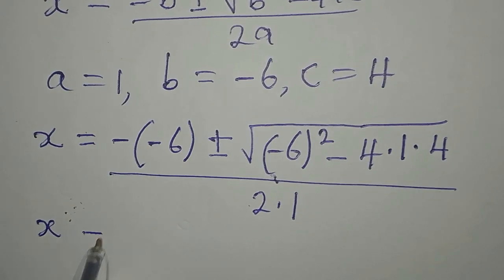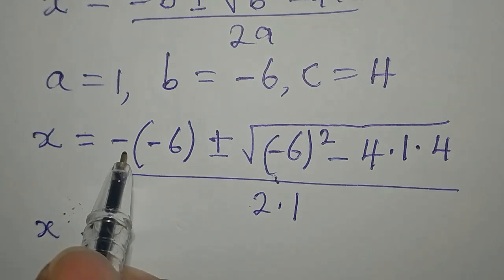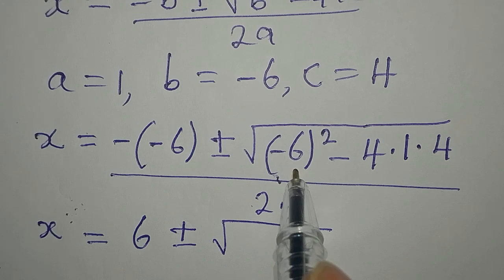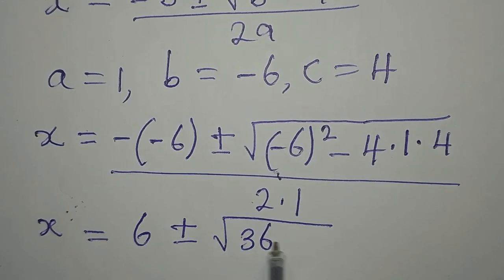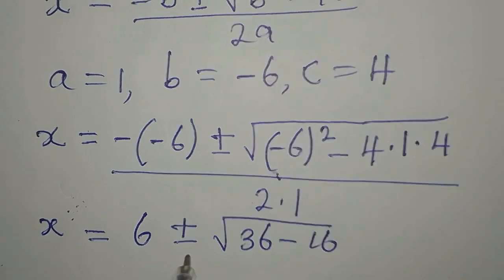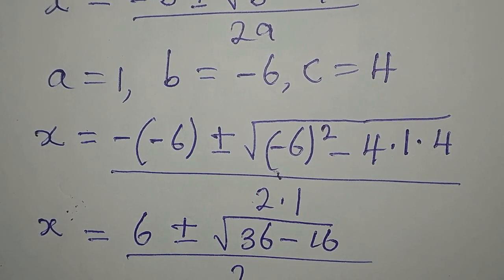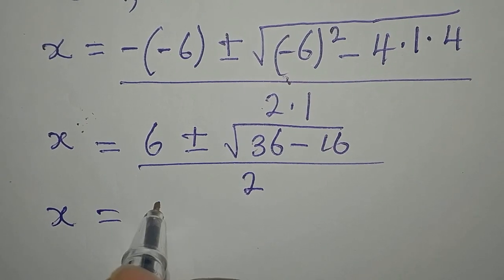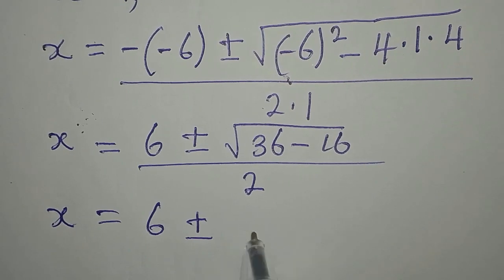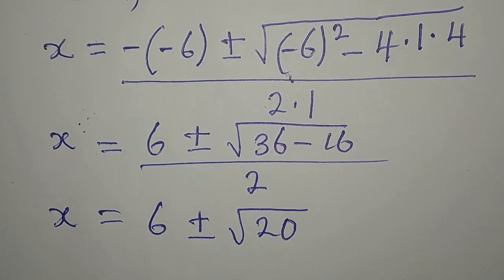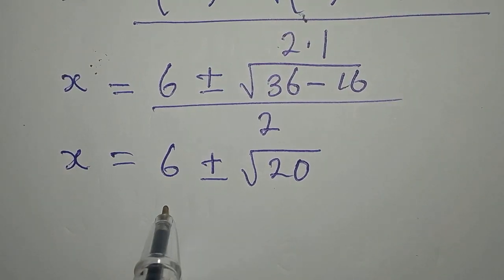So x equals positive 6, plus or minus the square root of: negative 6 squared gives 36, minus 4 times 1 times 4 is 16. So we have 36 minus 16 which is 20, all divided by 2.